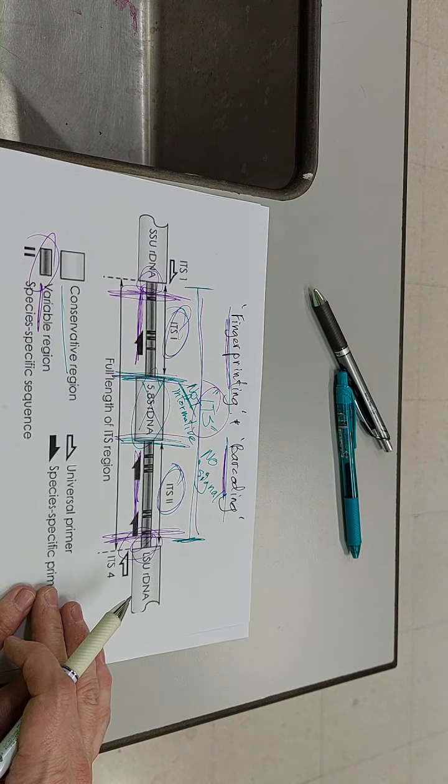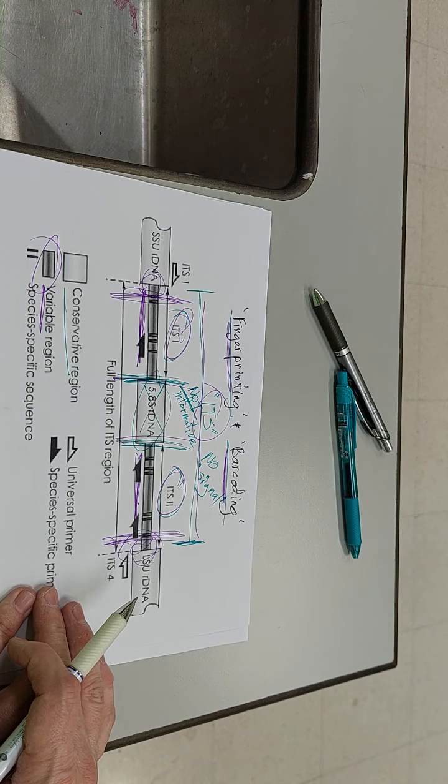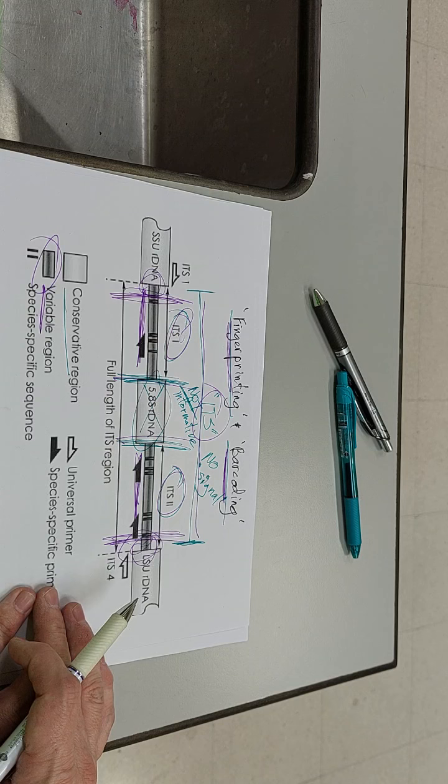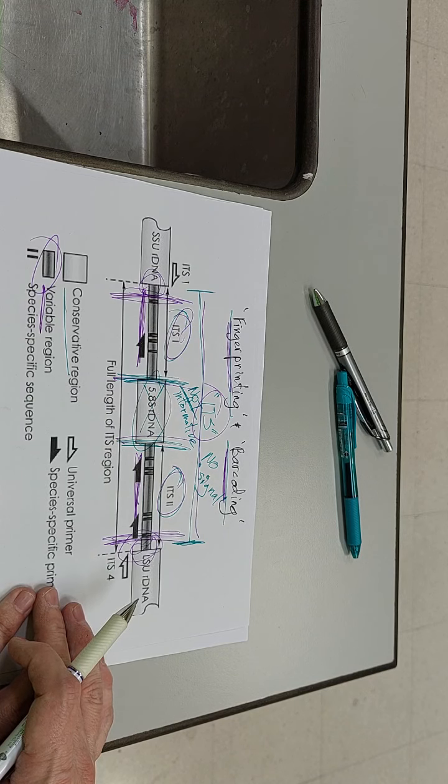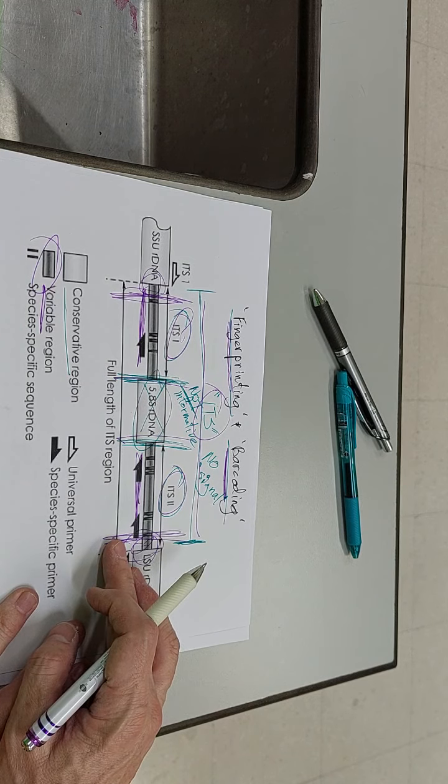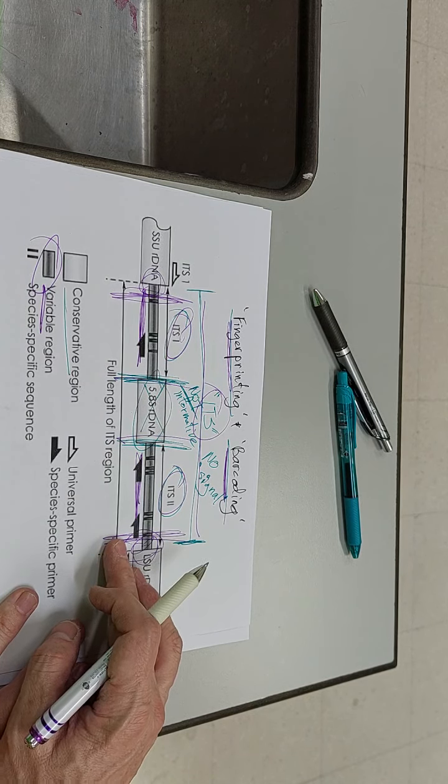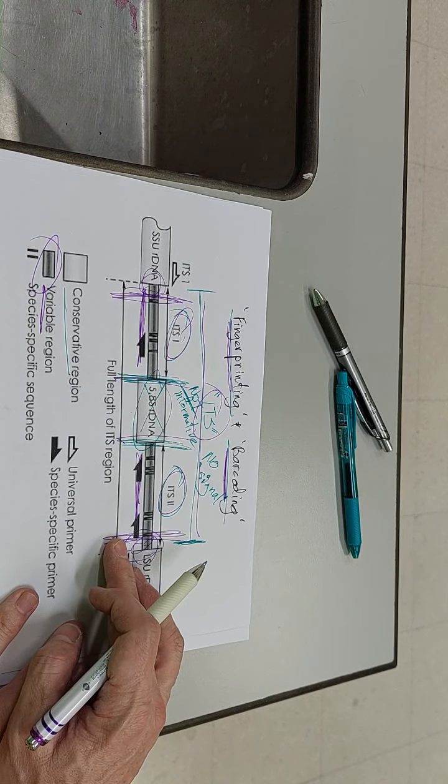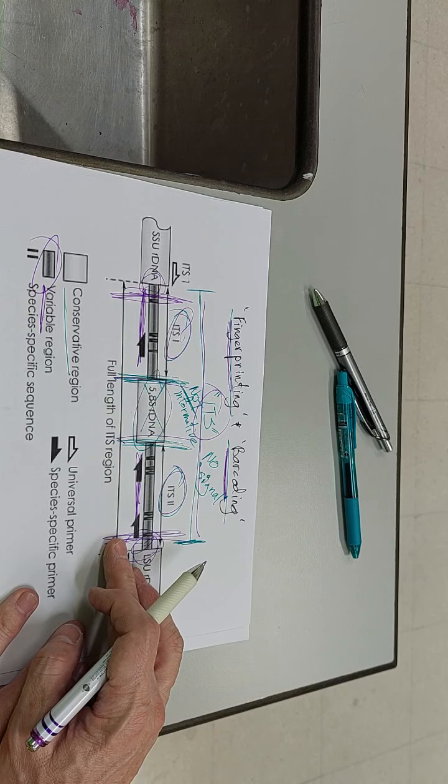That's where the problems start. We mostly in the cube community are dealing with strains, cultigens, varieties, isolates, hybrids, whatever you want to call them. I hate to say it and I hate to hurt anybody's feelings, ITS is useless below species.